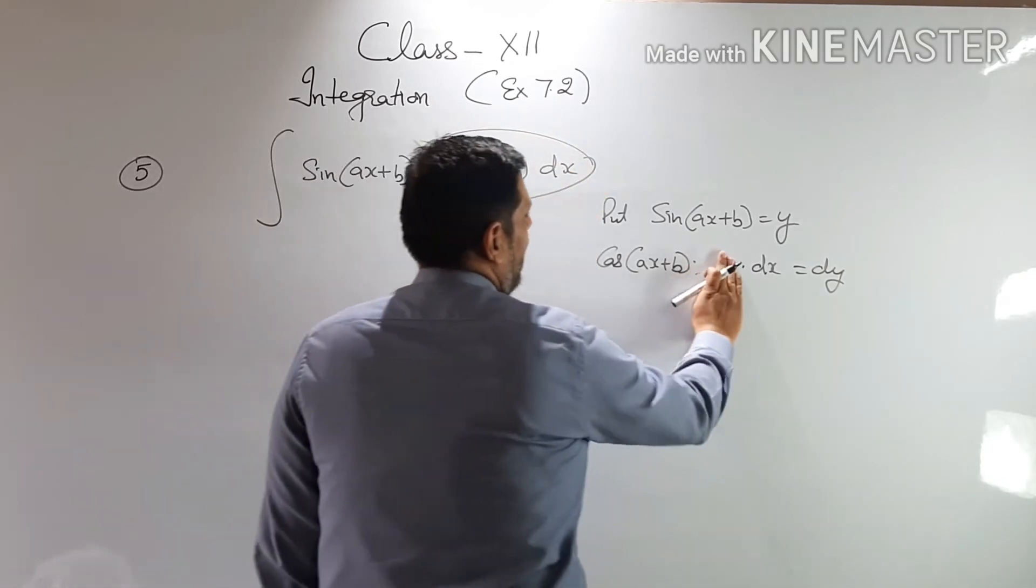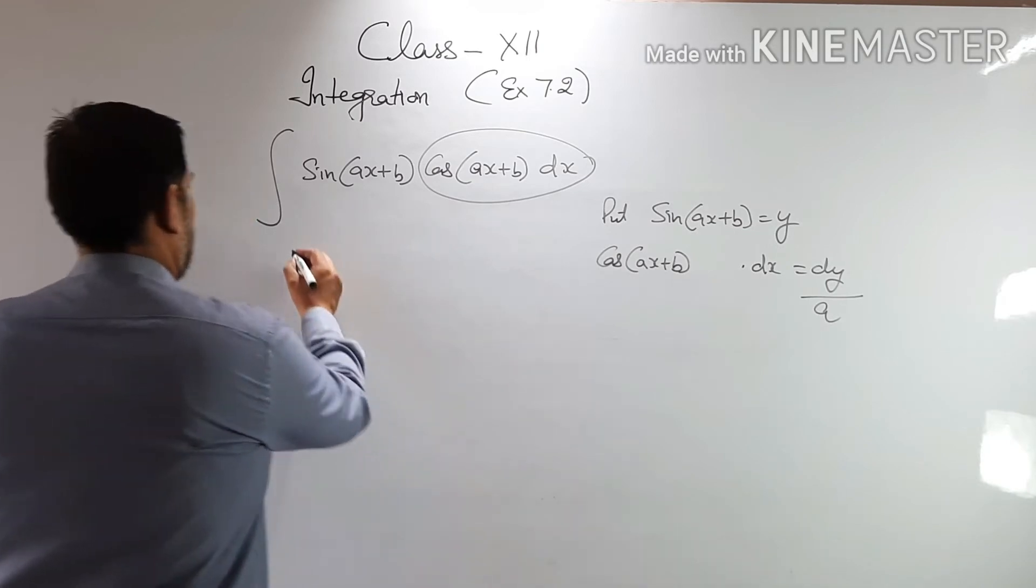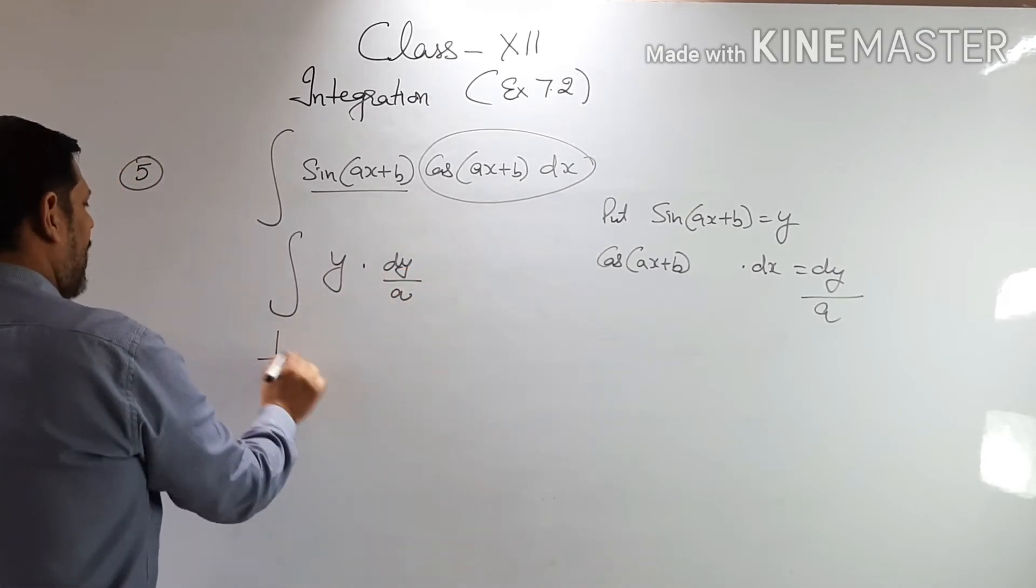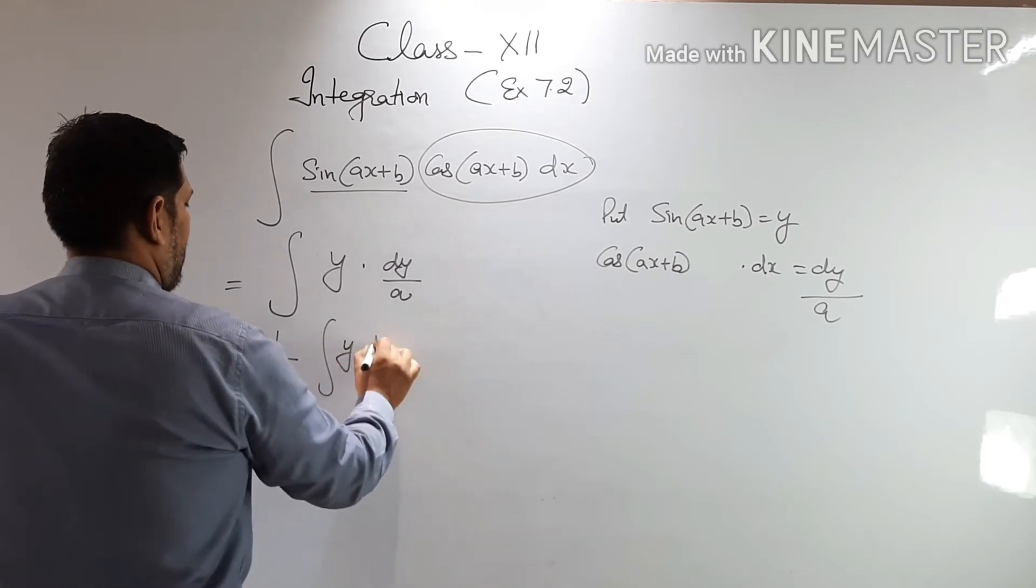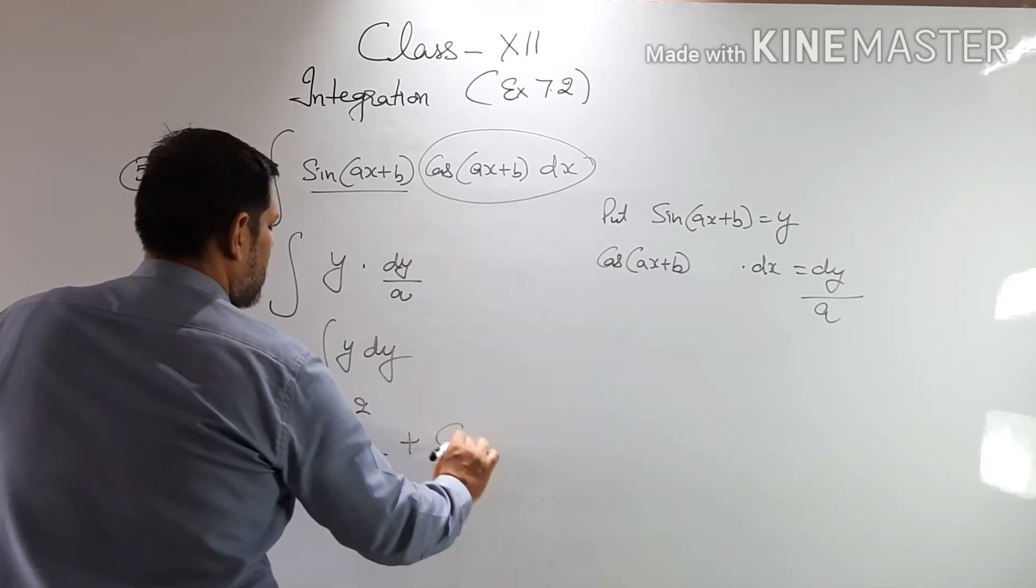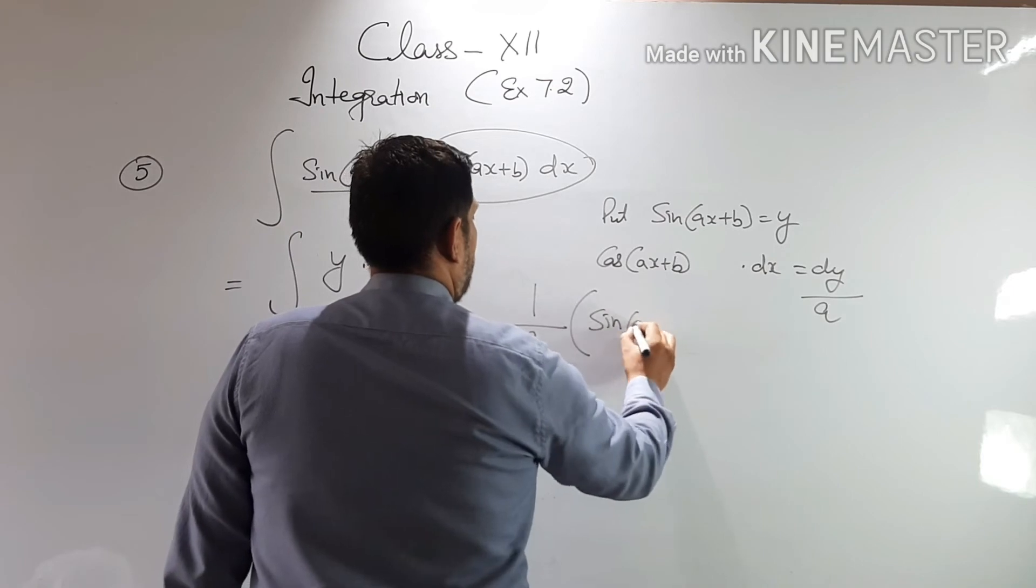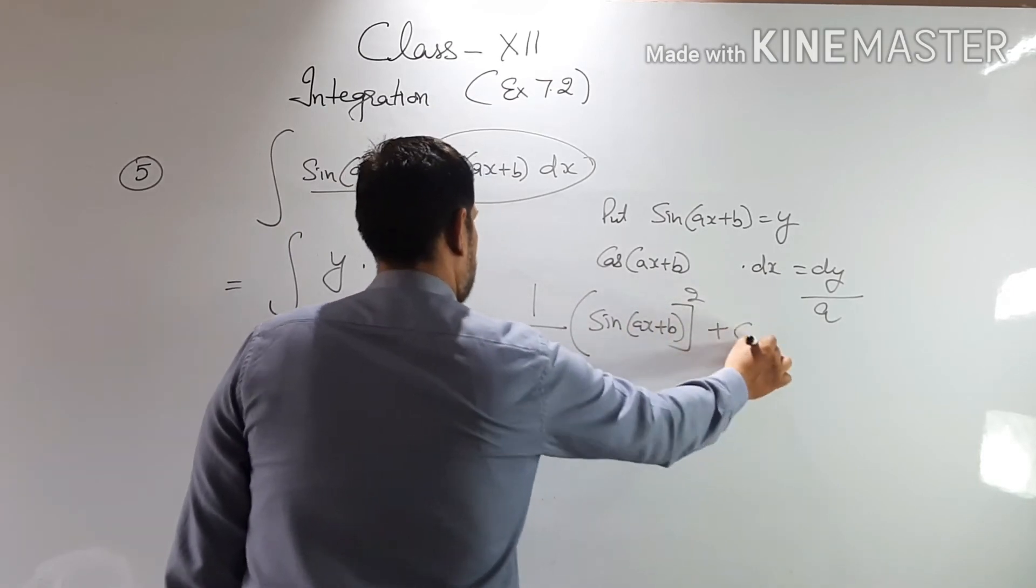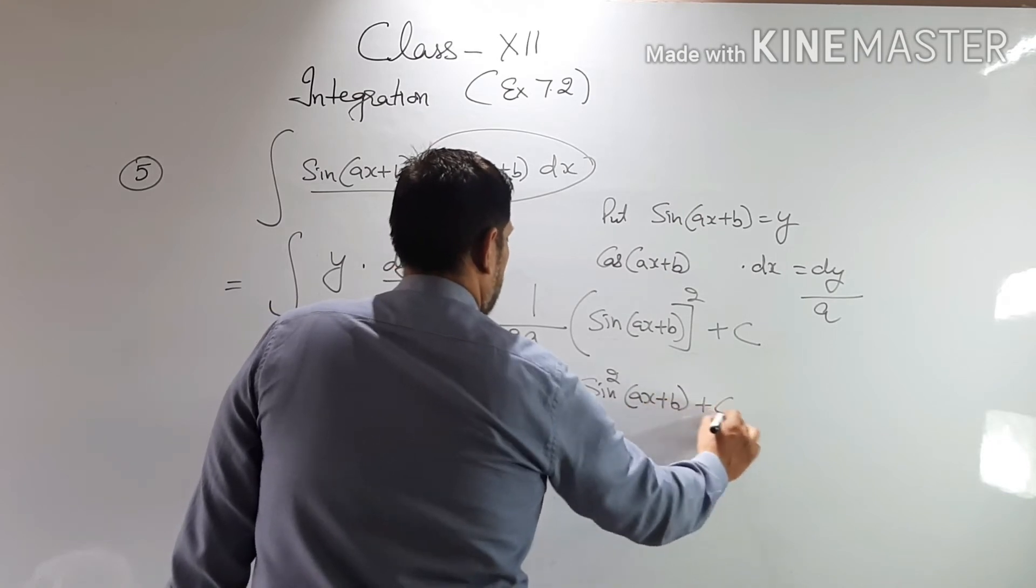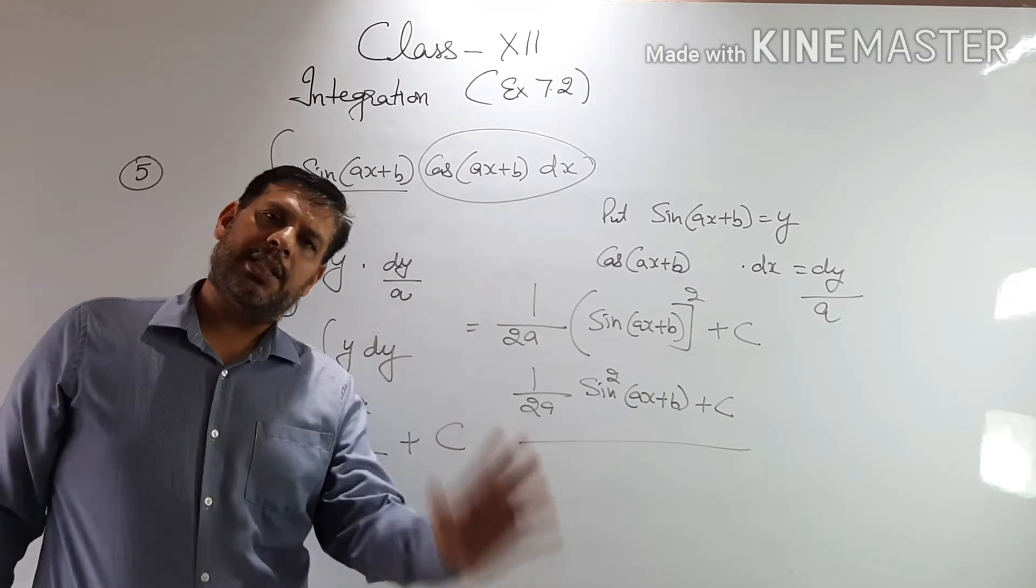So derivative of sin is cos ax plus b into derivative of the angle into dx and dy. So I need cos and this dx. I don't need this a. So what should we do with this? It was in multiplication, so it will come in division here. So this has become y, this has become dy by a. So 1 by a is common and this has become y dy. And y integral is 1 by a into y square by 2 plus c. So this has come as 1 by 2a and in place of y, sin ax plus b whole square plus c. So your answer is 1 by 2a sin square ax plus b plus c. If you put cos, the answer may come different, no problem. Both answers are correct and there's no difficulty.